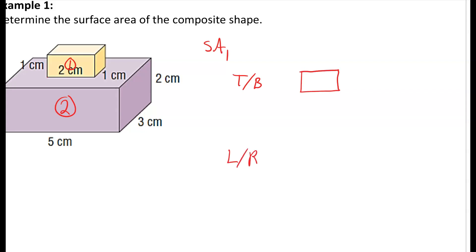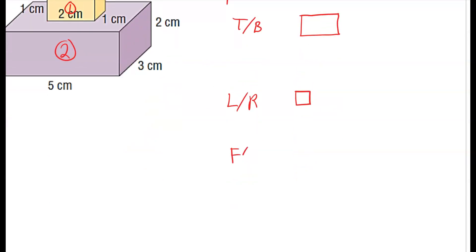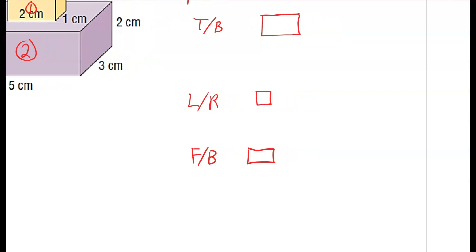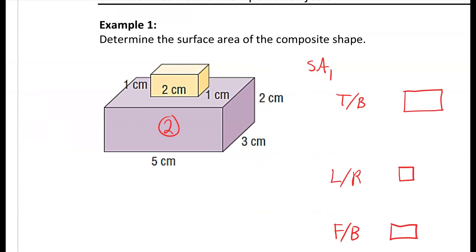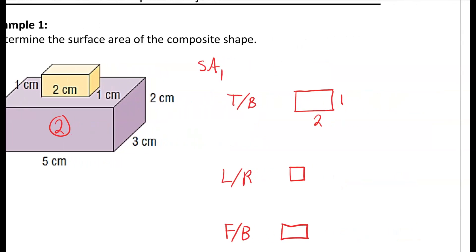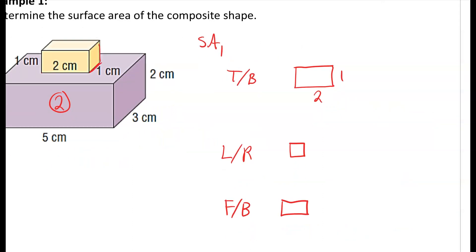For shape one, we have the left and the right — in this situation it's going to be a square — and the front and the back, which is again a rectangle. The top and bottom dimensions are 2 by 1, the left and right are 1 by 1, and the front and back are 2 by 1.